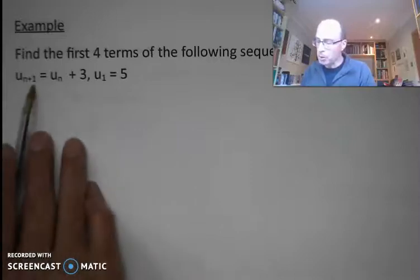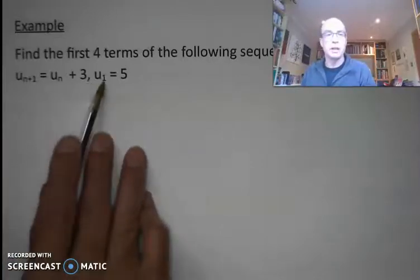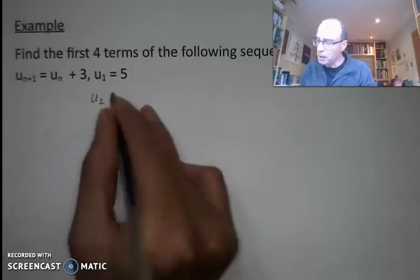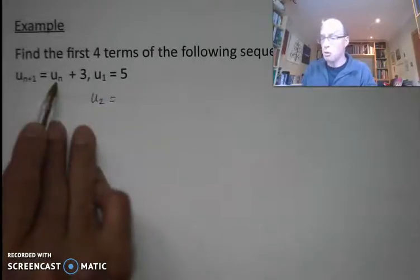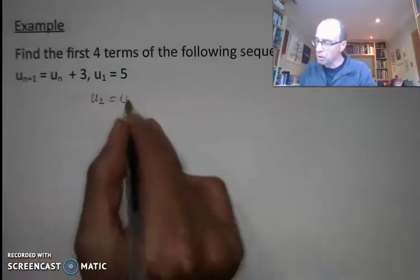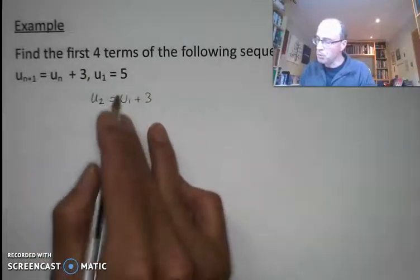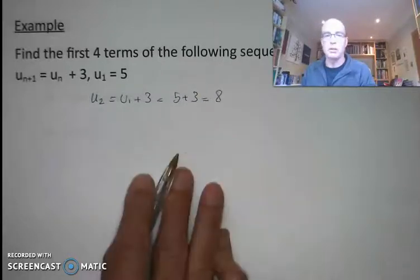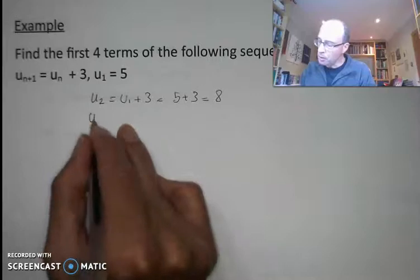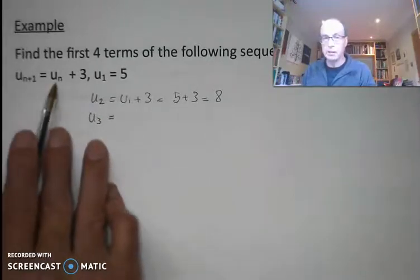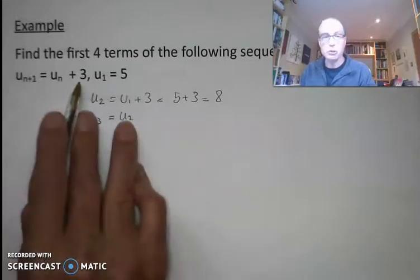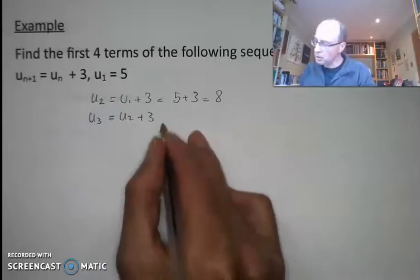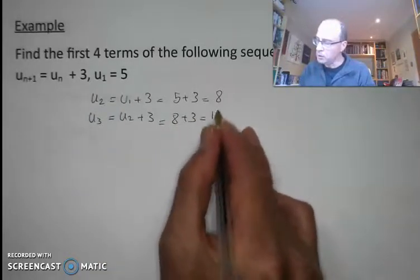Let's have a look at this one. We've got u_{n+1} is equal to u_n plus 3, and the first term u1 is equal to 5. So u2 is going to be equal to u1 plus 3 — u1 is 5, so this equals 5 plus 3, which is 8. The third term u3 is going to be equal to u2 plus 3. U2 we've just worked out is 8, so u3 equals 8 plus 3, which is 11.